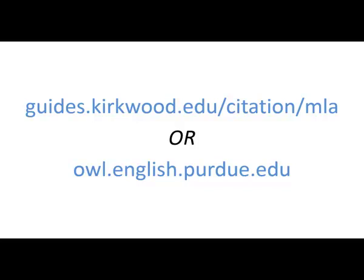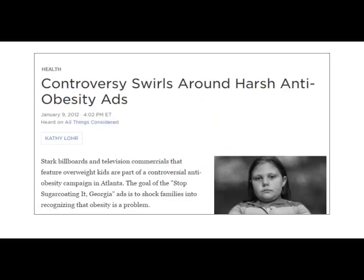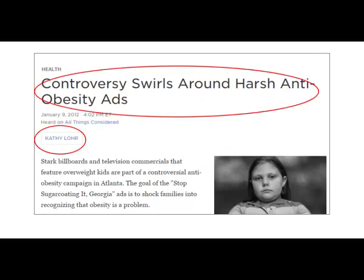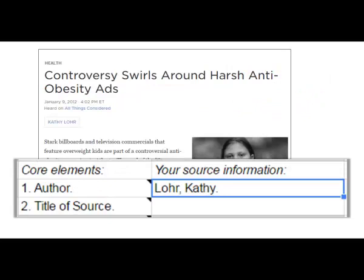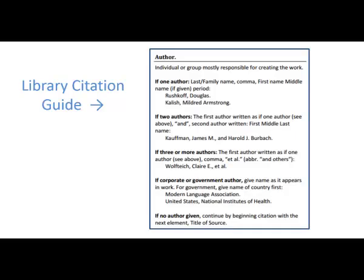These guides will explain in detail when to include each element and how to format it correctly. To demonstrate, I'm going to cite this online news article. The first two elements — author and title of source — you will have for almost any source you use. Notice that with each element I need to format it to match MLA style. For example, the author needs to be entered with the last name first, a comma, then the first name and middle name if given, then a period. Specific rules apply if there are multiple authors or if there is no author given. The guide will tell me what to do in each of those cases.